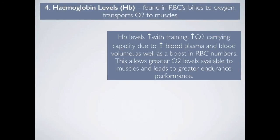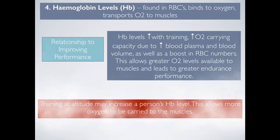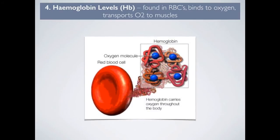Haemoglobin is found in red blood cells and binds to oxygen, transporting it to the muscles. Haemoglobin levels increase with training, so a trained athlete will have more haemoglobin in their blood than an untrained athlete. This increases oxygen-carrying capacity due to increased blood plasma, blood volume, and a boost in red blood cell numbers, allowing greater oxygen levels to be available to muscles and leading to greater endurance performance. As shown in the image, red blood cells contain haemoglobin, which attaches to oxygen and carries it throughout the body to working muscles.